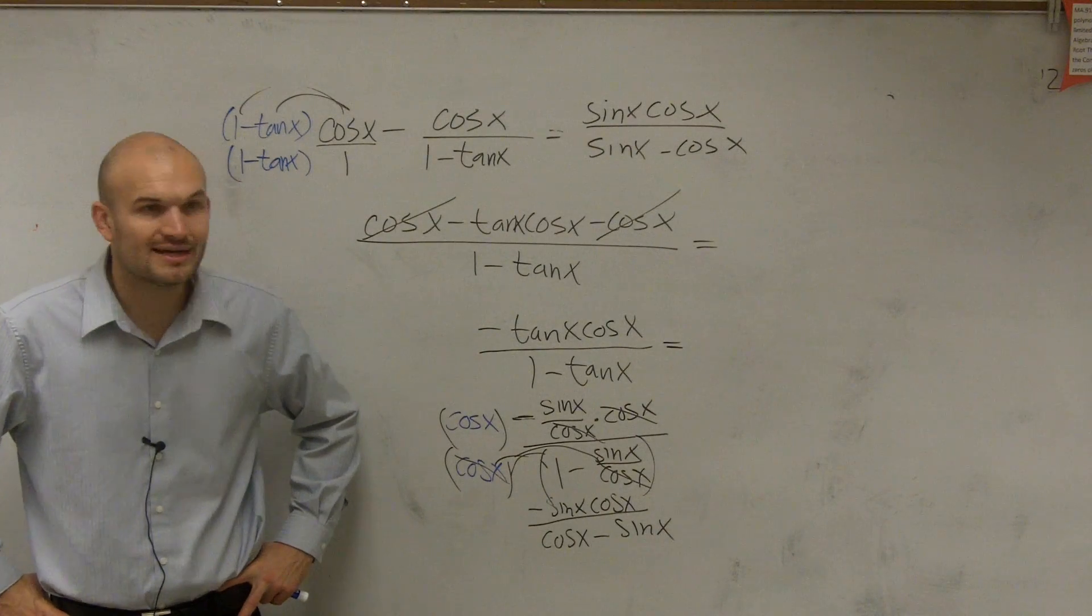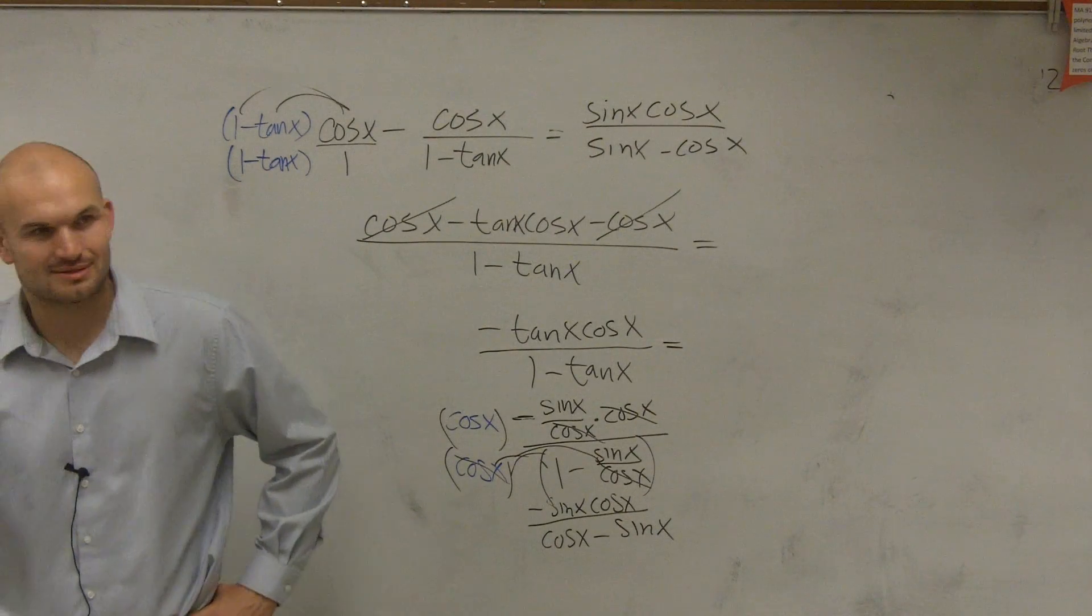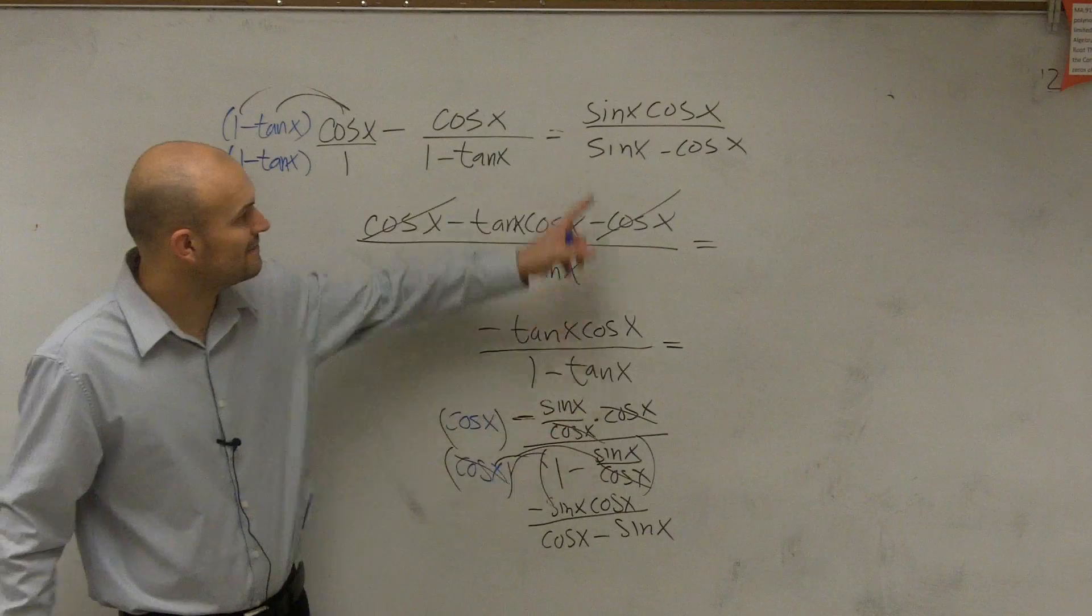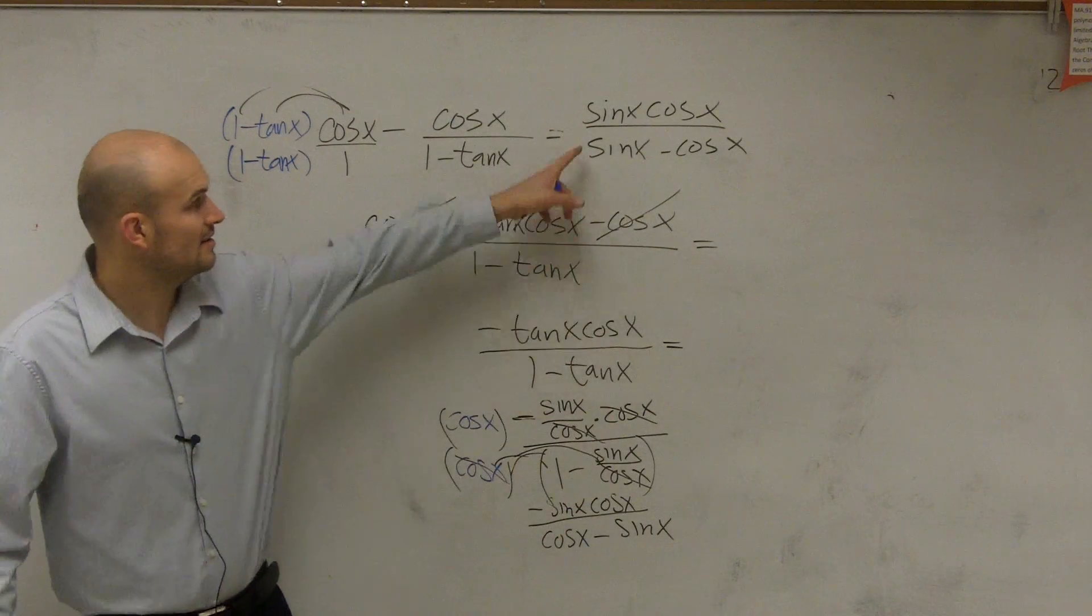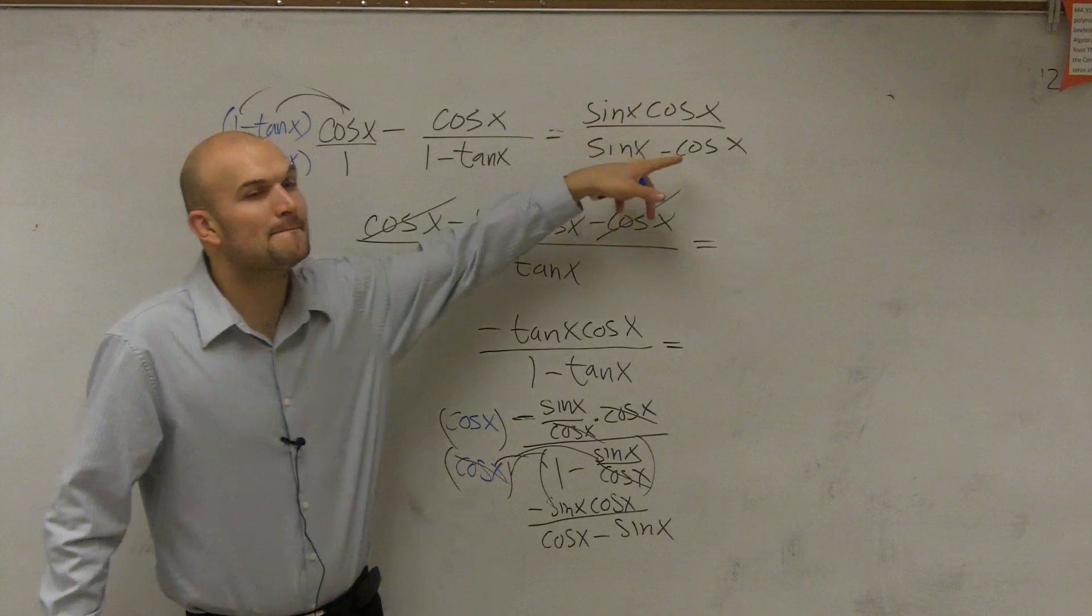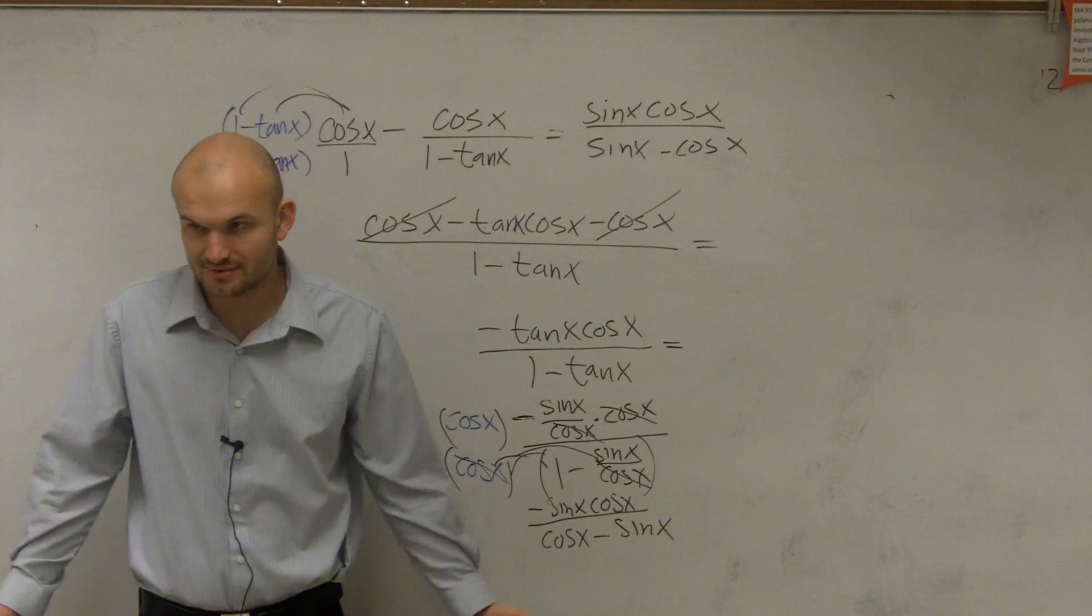And you're saying, oh, good, you got it. Close. Because, yes, we have, well, first of all, this is a negative sine of x times cosine of x. And this is sine of x minus cosine of x. It's not the same.